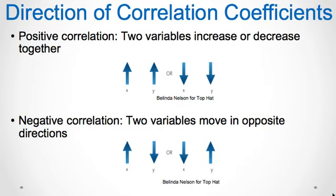The sign of a correlation coefficient tells us the direction of a linear relationship — positive or negative. A positive correlation coefficient means that the two variables have a positive linear relationship. This means the two variables increase and decrease together; they tend to change in the same direction. As the value of X increases from one individual to another, the Y variable tends to increase. When the X variable decreases, the Y variable also decreases.